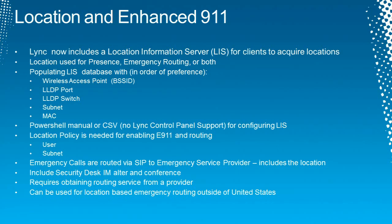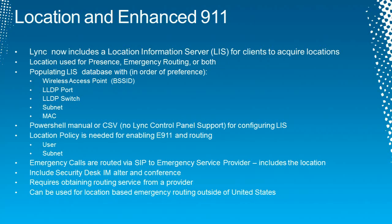The relation to E911 is that the same location list is used for emergency calling. The core E911 requirement is that when somebody dials 911, the first responders need to be able to correlate the location with the phone number. Our clients acquire the location and convey it with the emergency call. We require a partner that can receive these calls — the partner receives the SIP INVITE which includes the location, parses it, and routes the call to the correct PSAP based on location. This is a very important feature for soft phones because users can move IP phones around.